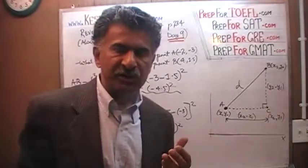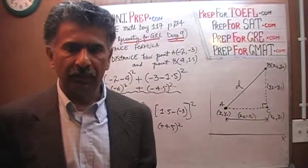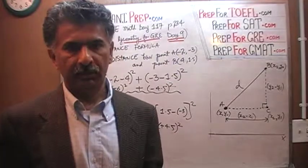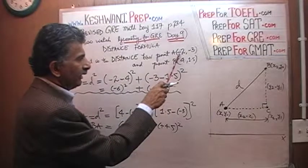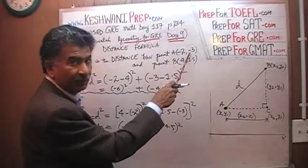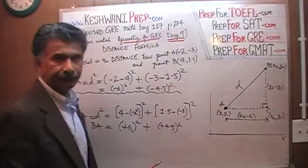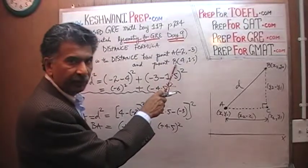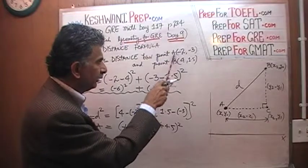The bottom line is it doesn't matter which point you call x1, y1 and which you call x2, y2, as long as you are consistent. If you go negative 2 minus 4 for x, then you go 1.5 minus negative 3 for y — you have to be consistent. If you're going this way for x, you have to go the same way for y.